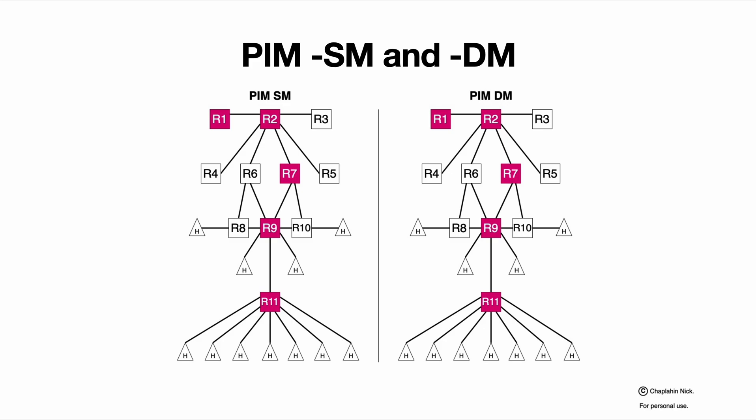Sparse mode tries to build a topology to actual receivers, so finding actual receivers in the network, building a topology to those actual receivers, and sending traffic on that.